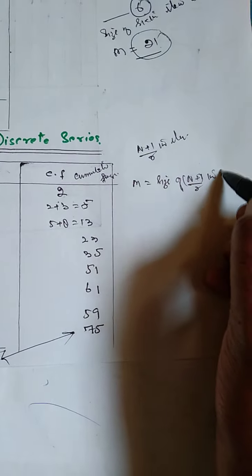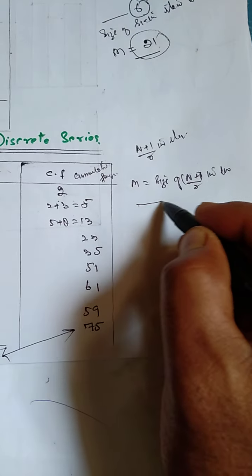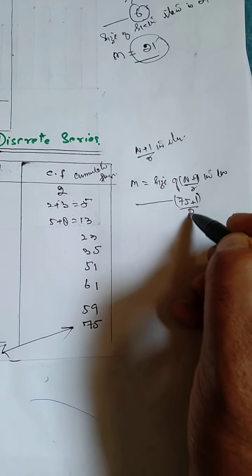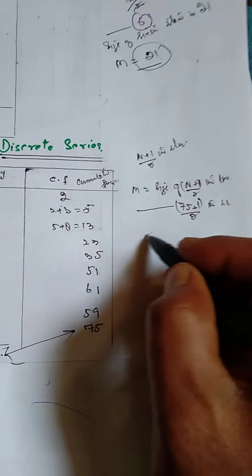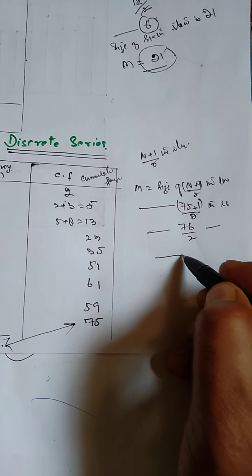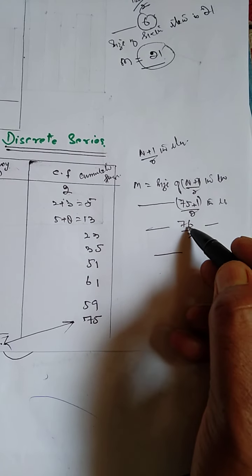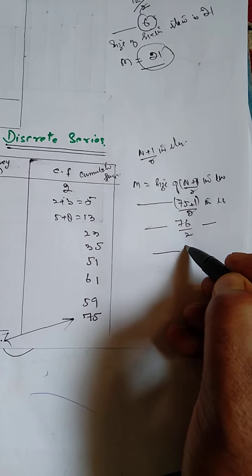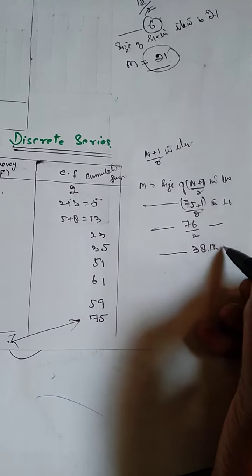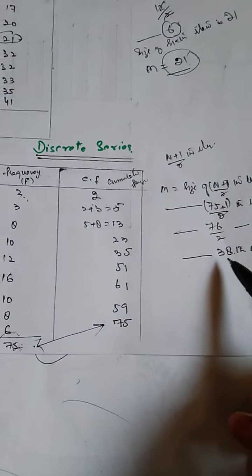Now the formula: our median is equal to size of n plus 1 upon 2. What is n here? It's 75. 1 is from formula, upon 2. That is 76 by 2, that is 38. So we get 38th item.